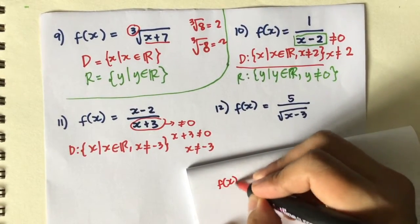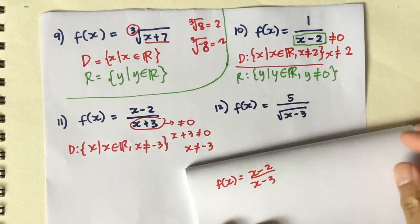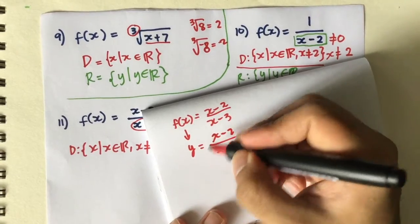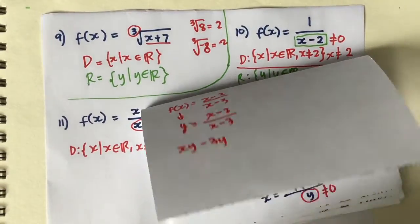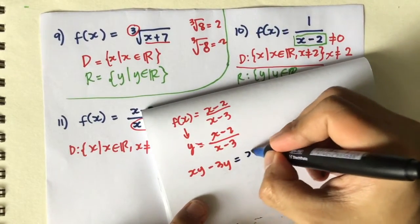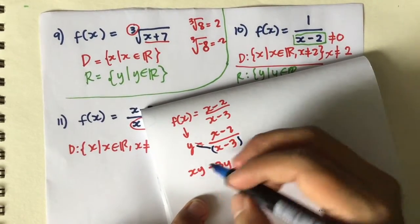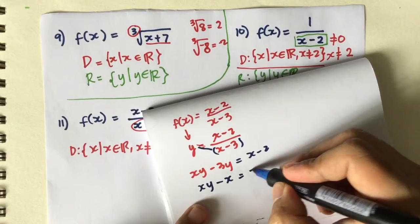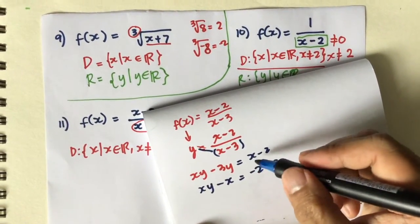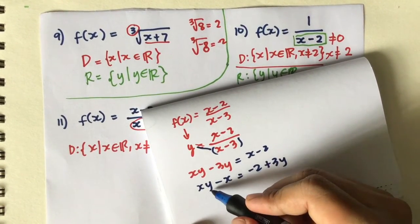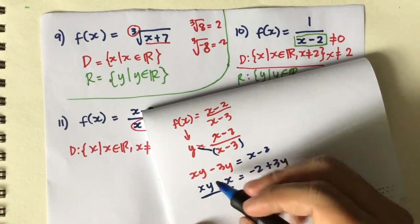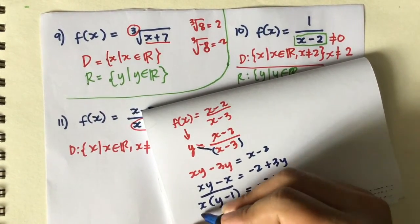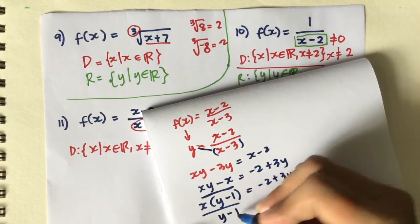For the range of number 11, we solve for x in terms of y. We have y = (x - 2)/(x - 3). Multiplying: xy - 3y = x - 2. Isolating x terms: xy - x = -2 + 3y. Factoring out x: x(y - 1) = 3y - 2. Dividing both sides by (y - 1): x = (3y - 2)/(y - 1).